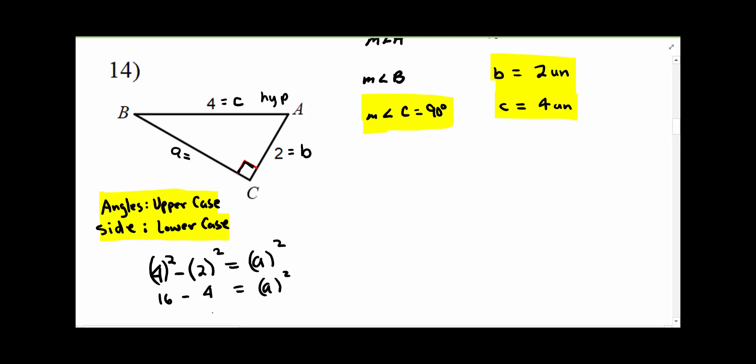Well, 12 is the same thing as 4 times 3, is equal to a squared. And then when we take the square root of both sides, look at how handy that is, the square root of 4 is 2. So I know that this side is going to be...